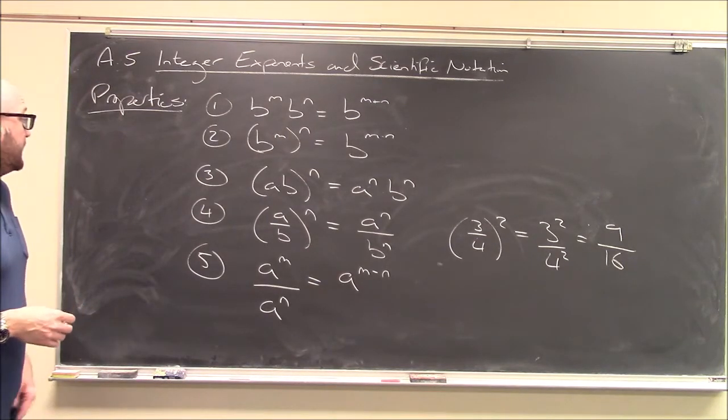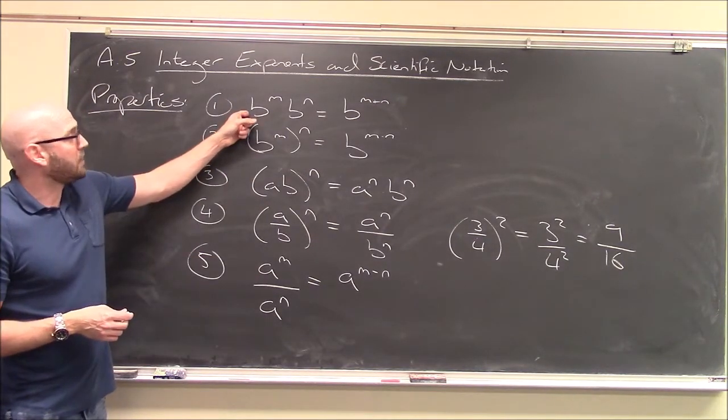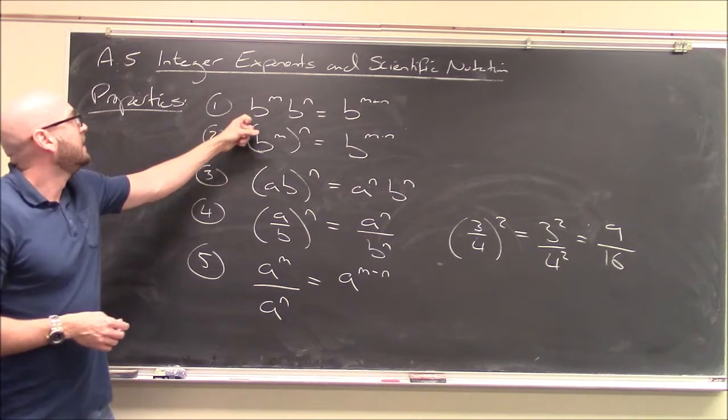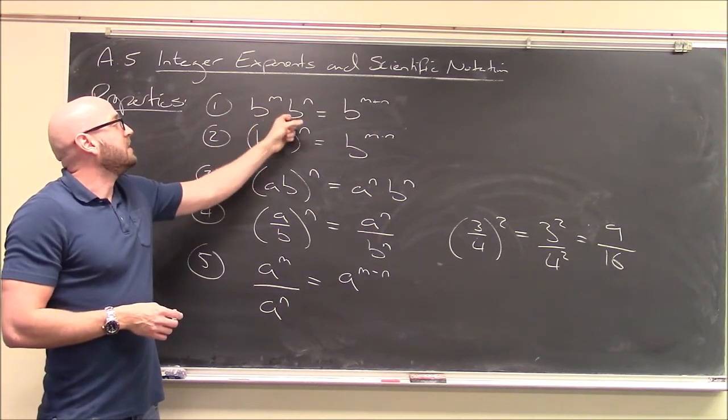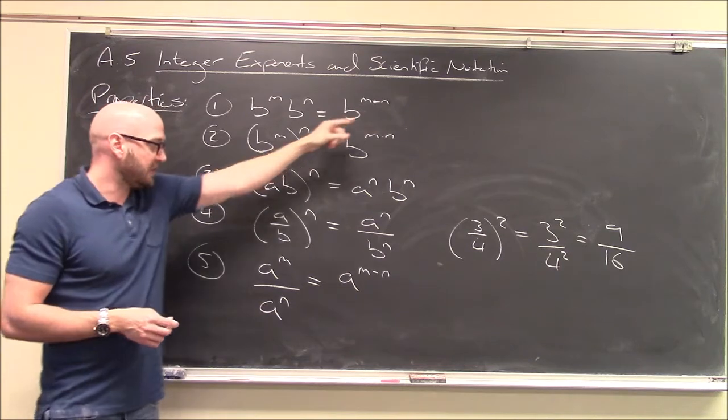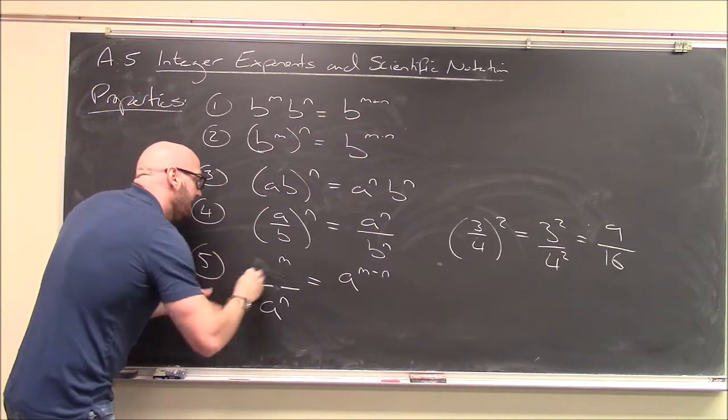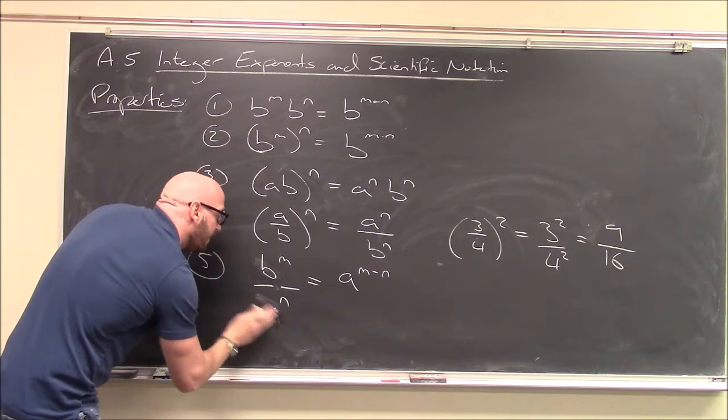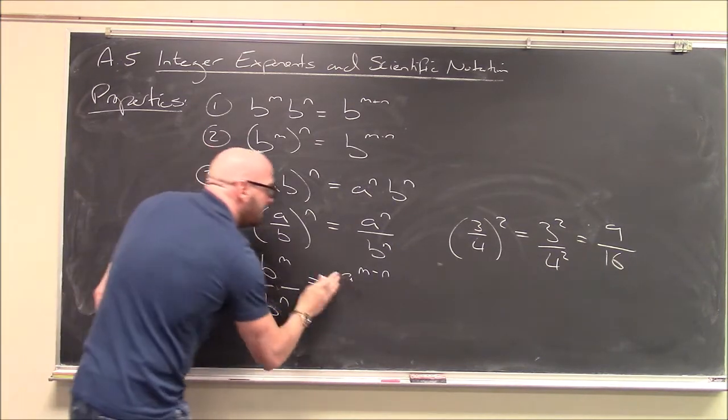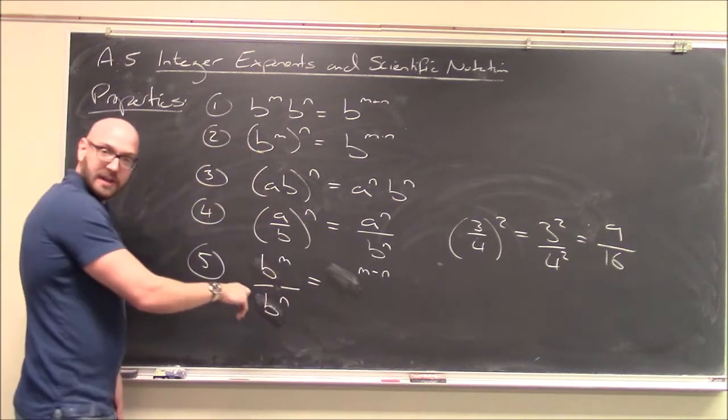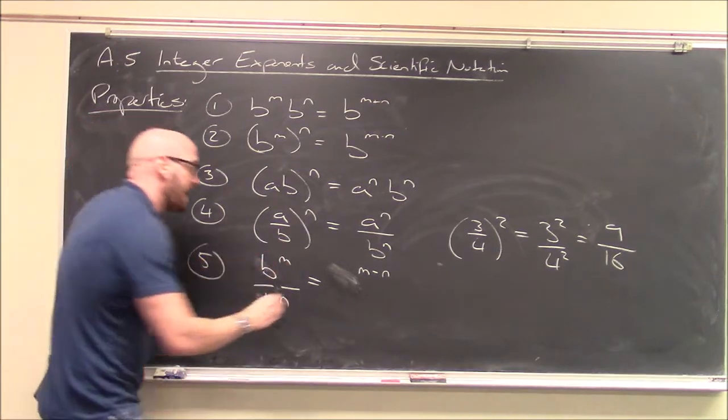And lastly, this is closely related to our first property number 1, where we've got b to the m times b to the n, since you add the exponents together. This is now, b to the m over b to the n. So instead of multiplying, now I'm dividing, what you do is you subtract the exponents. So this would be b to the m minus n.